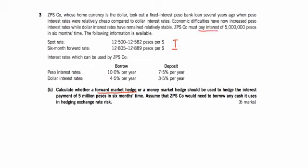Looking at the question, they must pay interest, so it's a payment. Now, if you make a foreign payment, you will go to your home bank and you don't have any of that foreign currency. So the bank will sell it to you — it will sell you that foreign money in order for you to make your payment, and banks sell low.